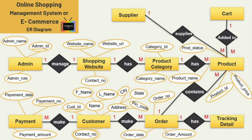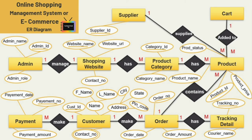Next let's see the attributes for the entity order. We have three attributes: order number, order date, and amount. Order number is the key attribute. Next is the tracking details entity — we have two attributes: tracking number and courier name, where tracking number is the key attribute. Now for the supplier entity, the first attribute is supplier ID, which is the key attribute, followed by supplier name and address.